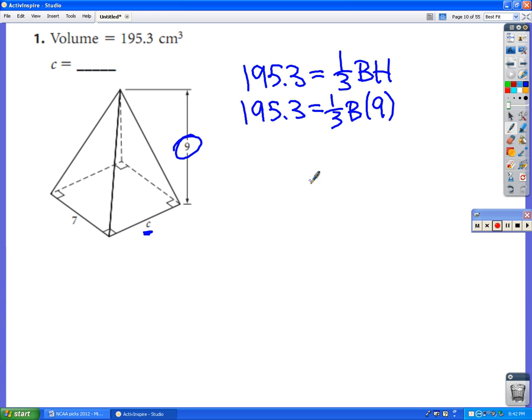So one-third of 9 is 3. So 195.3 equals 3 times the area of the base. Divide both sides by 3 and 195.3 divided by 3 works out to be 65.1.